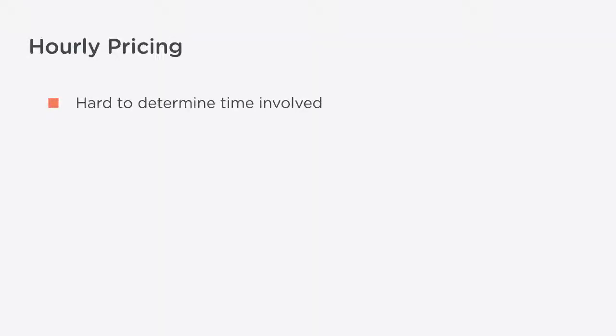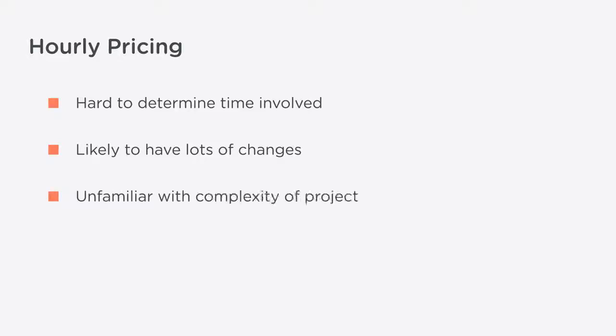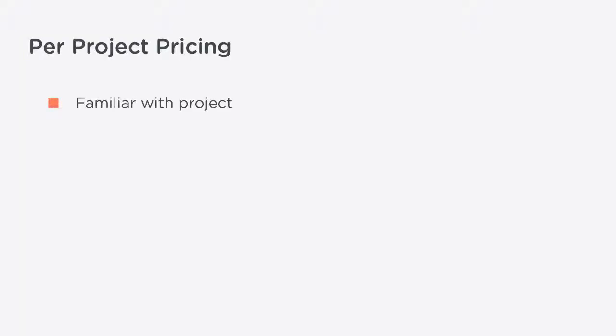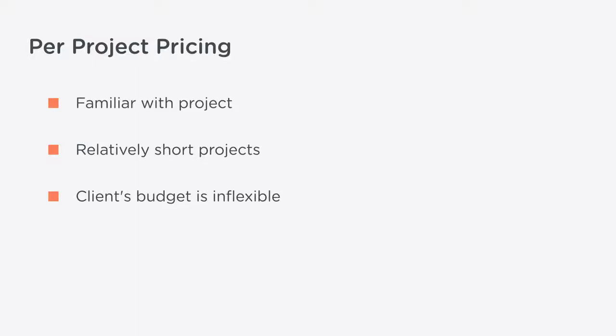There are situations where certain pricing models are better suited than others. Charge per hour if you don't know how long the project will take, if it seems like the project may change or have lots of additions along the way, or if it's something you haven't done before. Go with per-project pricing if you've done this type of project often enough to know how long it takes, the project is relatively short and specific, and your client's budget isn't very flexible.